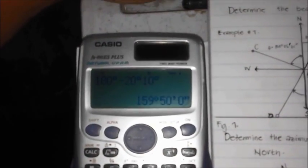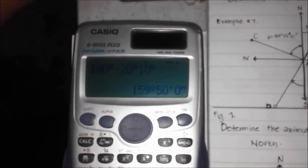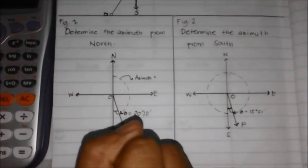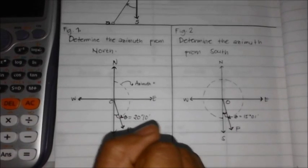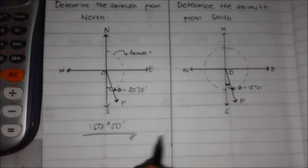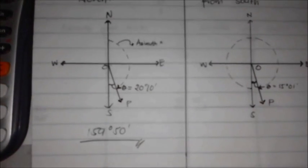So, the answer is 159 degrees and 50 minutes. Therefore, the azimuth from the north to the line OP is 159 degrees and 50 minutes.